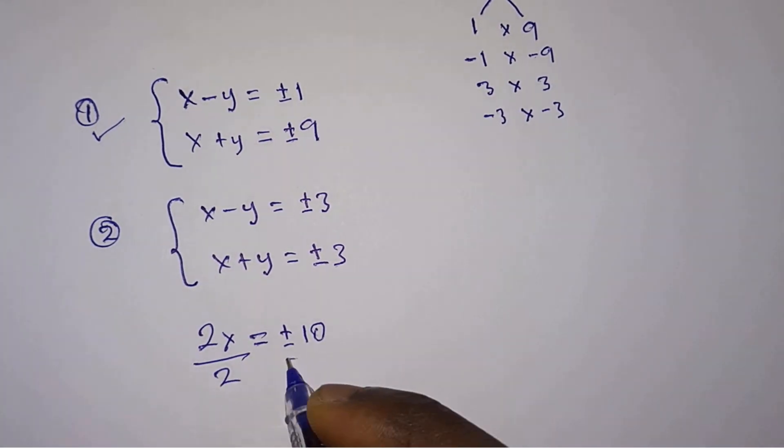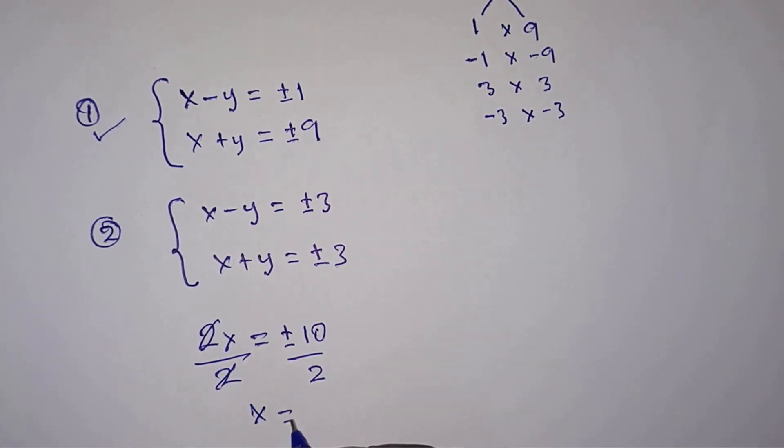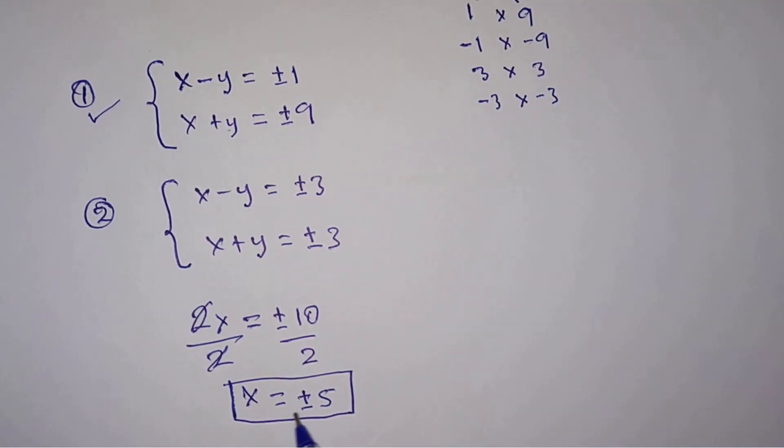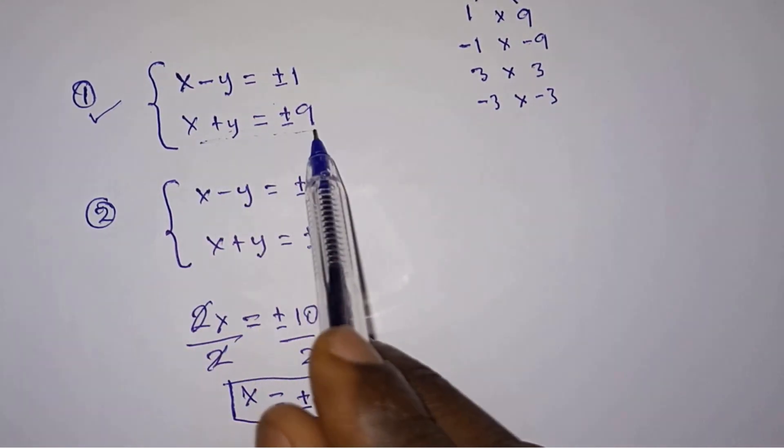We want x, so we will divide each side by 2. We have x is equal to plus or minus 5.